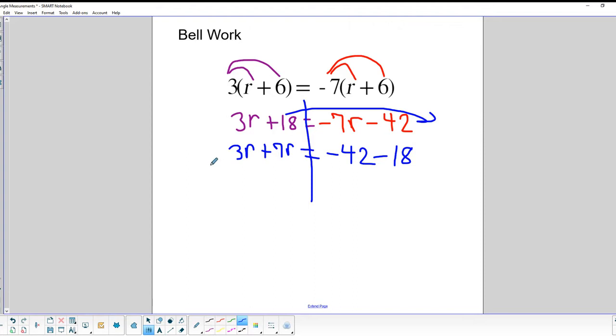And then when we combine 3R and 7R, we get 10R. And then negative 42 and minus 18 ends up being negative 60. That's looking pretty friendly. So we divide both sides by 10. And when we do that, we end up with an R value of negative 6. So there we go, R equals negative 6.